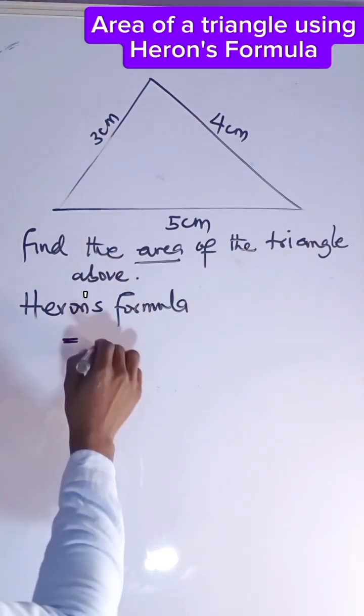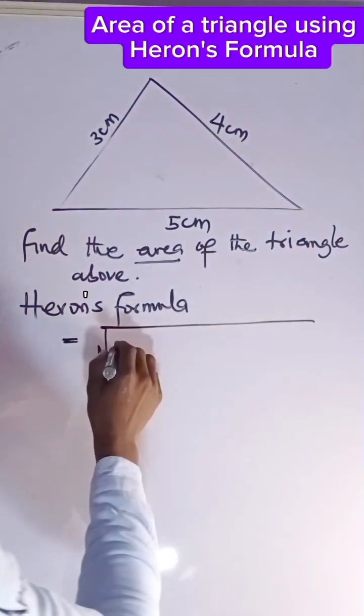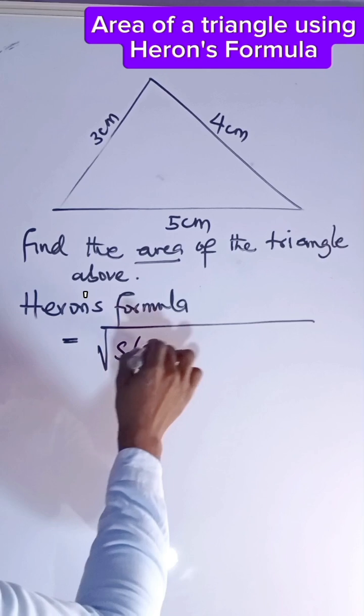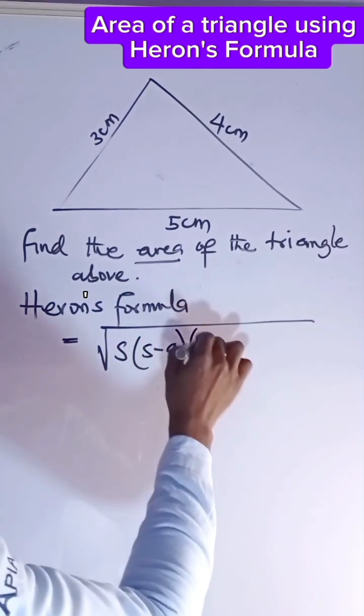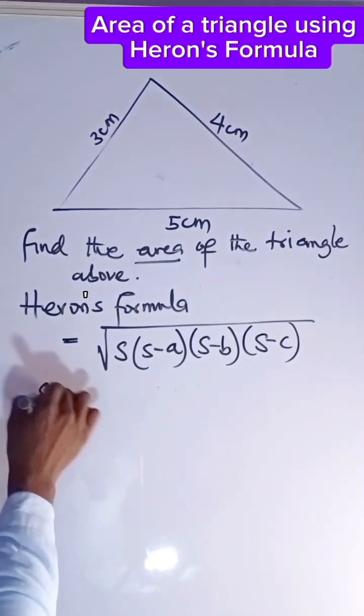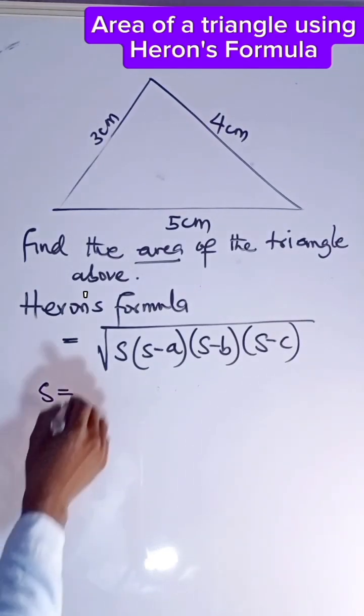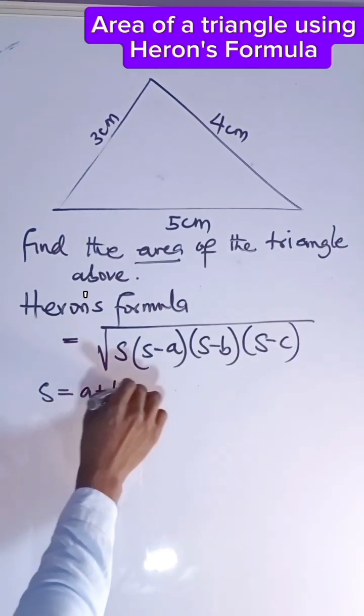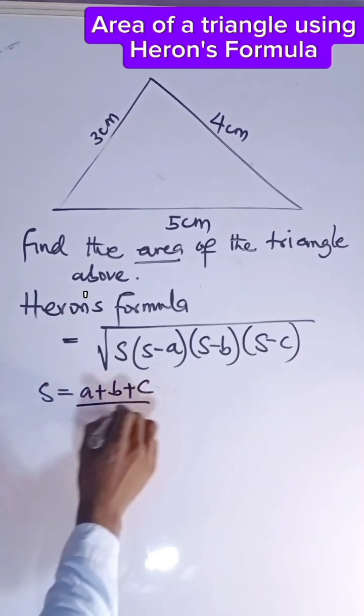So according to Heron's formula, we have the formula to be square root of s times (s minus a) times (s minus b) times (s minus c). Now, your s is going to be (a plus b plus c) all over 2.